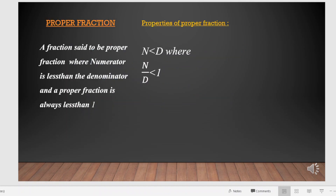What is a proper fraction? A fraction is said to be a proper fraction where the numerator is less than the denominator, and a proper fraction is always less than 1. The numerator has to be less than the denominator, and the value of n by d is always less than 1.